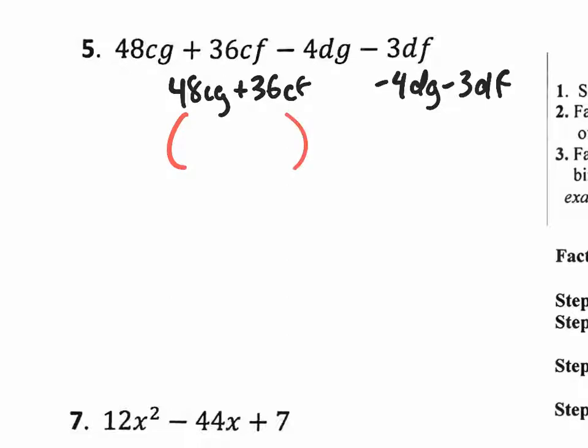You want to factor something out of that first group. There is a multiple of 12 and also a common letter, common variable C. So your GCF is actually 12C. If you pull out that 12C, you will have a 4, no more C, just a G.